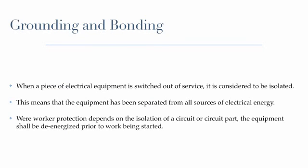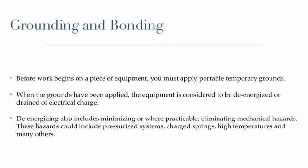When a piece of electrical equipment is switched out of service, it is considered to be isolated. This means that the equipment has been separated from all sources of electrical energy. Where worker protection depends on the isolation of a circuit or circuit part, the equipment shall be de-energized prior to work being started. Before work begins on a piece of equipment, you must apply portable temporary grounds. When the grounds have been applied, the equipment is considered to be de-energized or drained of electrical charge. De-energizing also includes minimizing, or where practicable, eliminating mechanical hazards.